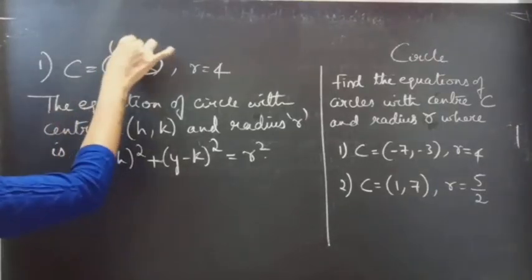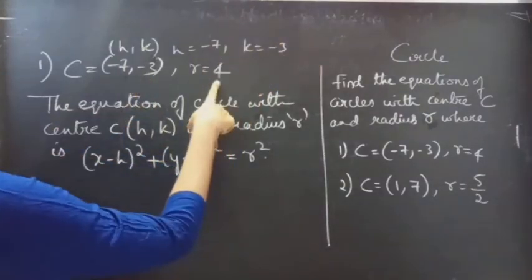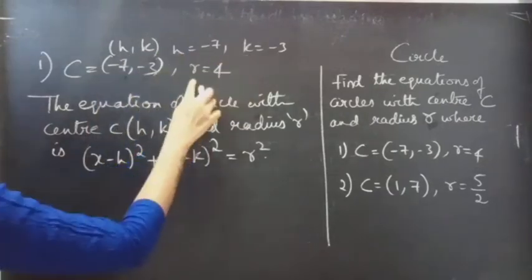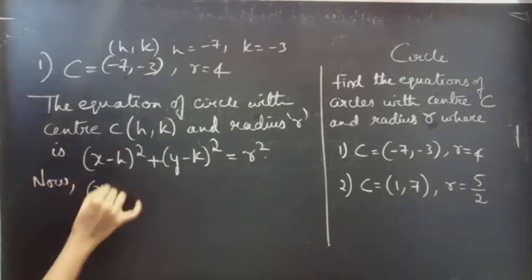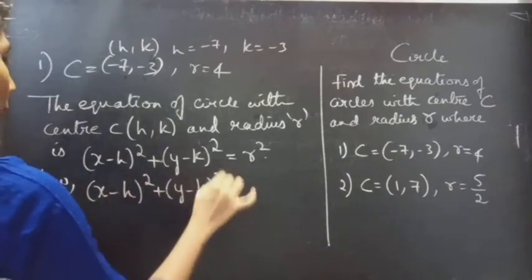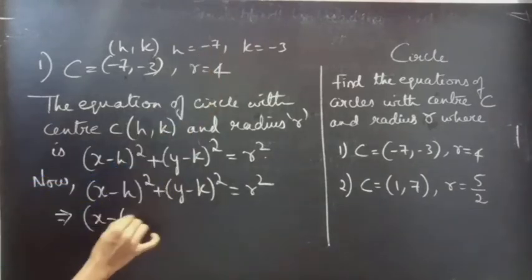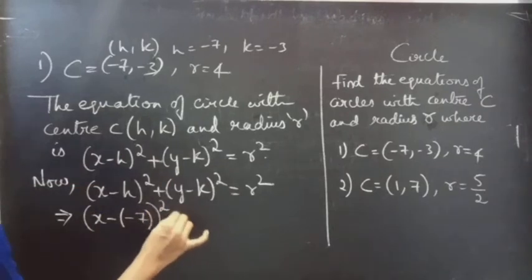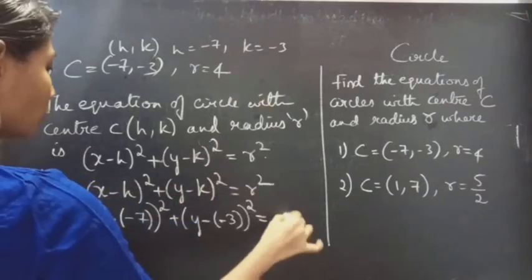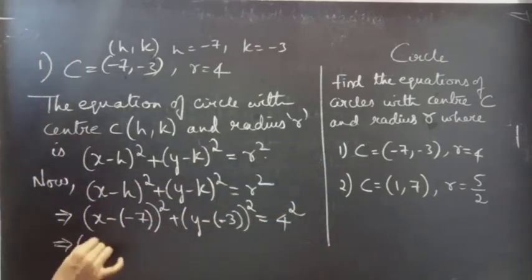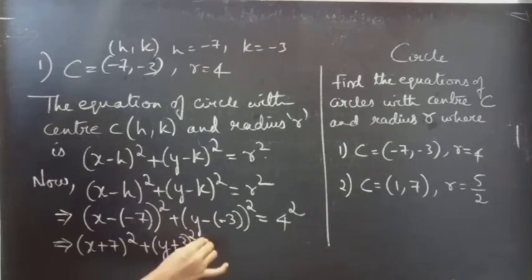So we are given center H equals minus 7 and K equals minus 3, and radius R equals 4. By substituting H, K, and R values into the equation, we get: X minus (minus 7) whole square plus Y minus (minus 3) whole square equals 4 squared, which is 16. That gives us X plus 7 whole square plus Y plus 3 whole square equals 16.